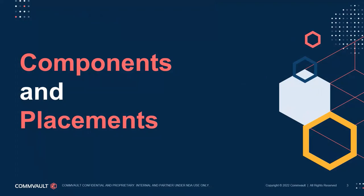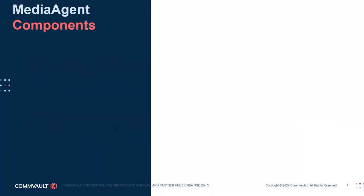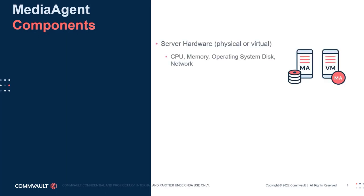Now let's look at media agent components and how to properly place them. The media agent, an essential part of every solution's data plane, comprises various physical and logical components. The first physical component is the compute layer. Although typically deployed on physical hardware, an increasing number of media agents are deployed as virtual instances, either on-premises or in the cloud. Media agents typically generate significant I/O, so careful planning of virtual resources is required.